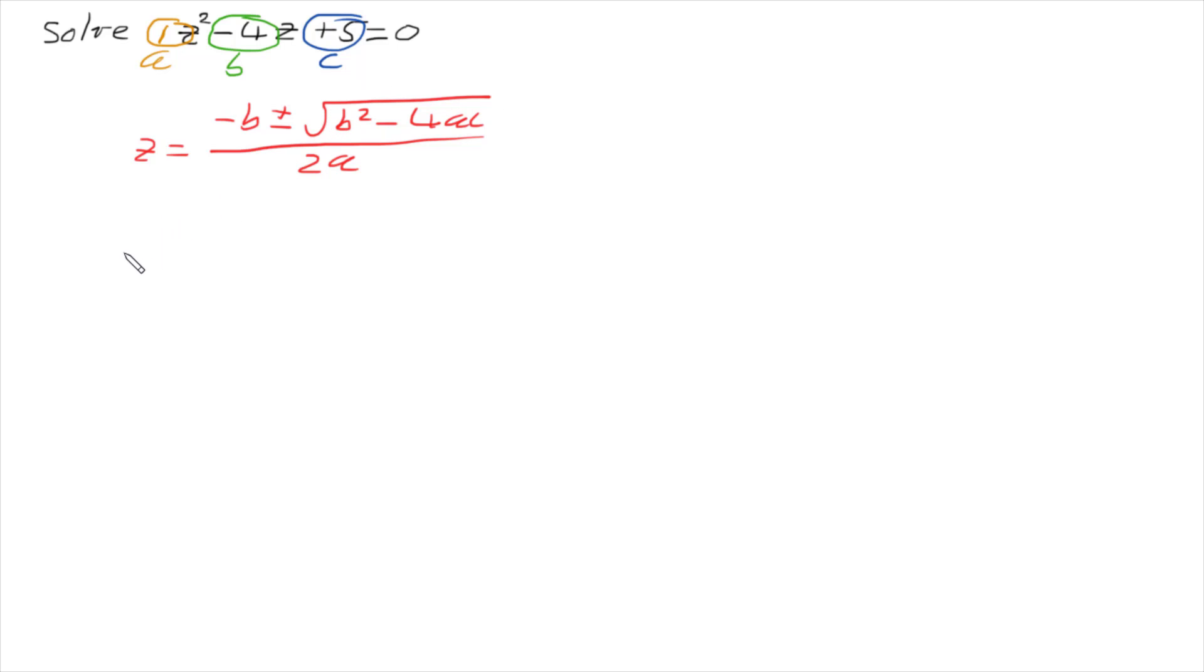So going in and filling in our information, z is going to be negative of whatever b is. So we're going to have negative of negative 4 plus or minus the square root of that b negative 4 squared.